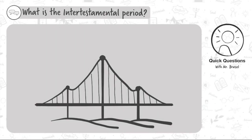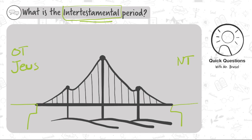Our question today is: what is the intertestamental period? You might recognize the word 'testament' in there. The Bible is split into two testaments — the Old Testament and the New Testament. The most important characters in the Old Testament, besides God, are the Jews, and in the New Testament there is Jesus. Did you know there are 400 years between the Old and New Testaments, represented by just an empty page in our Bible?